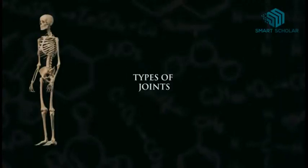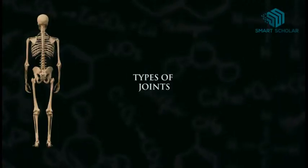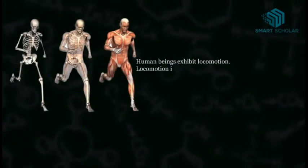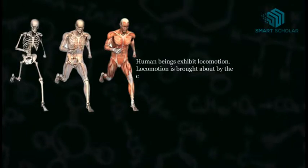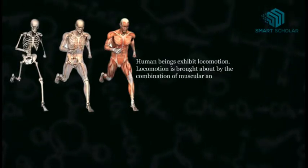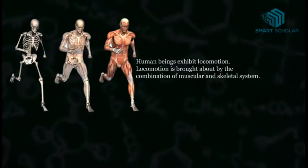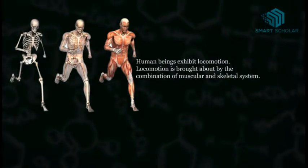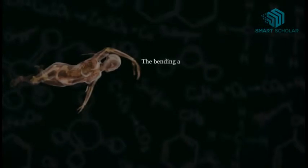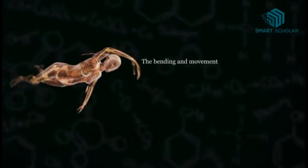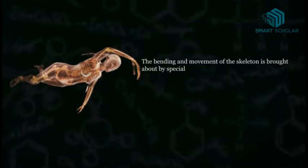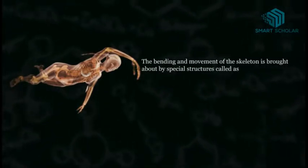Types of Joints. Human beings exhibit locomotion. Locomotion is brought about by the combination of the muscular and skeletal system. The bending and movement of the skeleton is brought about by special structures called joints.